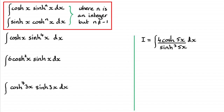Hi. In this video I want to extend the work we've been doing with integration of hyperbolic functions. We're going to be looking at types like cosh(x) multiplied by sinh(x) to the power n, or sinh(x) times cosh(x) to the power n, integrated with respect to x. Now n is an integer but it cannot equal negative one for this to work.